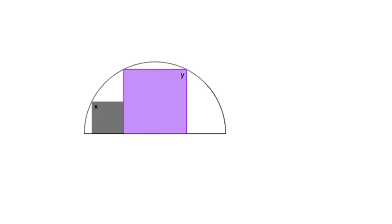Let's say that the grey square has side length x, and the blue square has side length y.